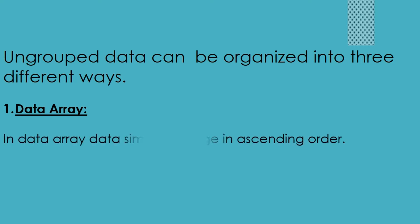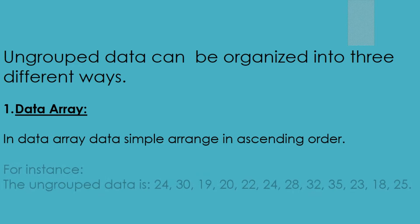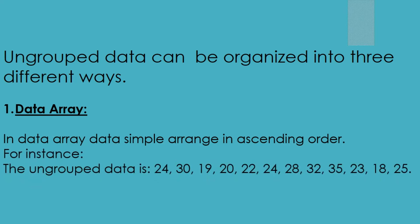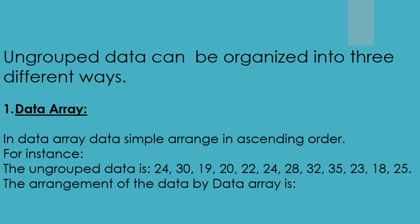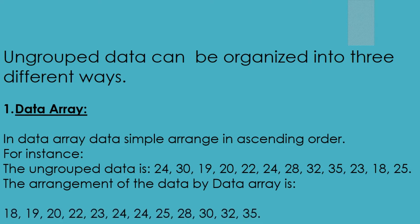The first method is the data array, where data is simply arranged in ascending order. Ungrouped data consists of few observations, and an example arrangement by data array is: 18, 19, 20, 22, 23, 24, 24, 25, 28, 30, 32, and 35.